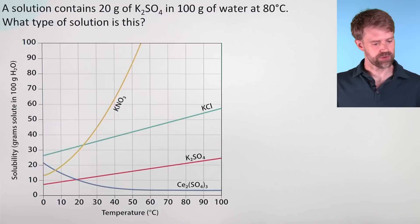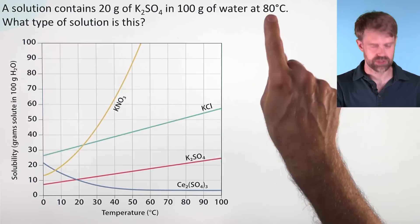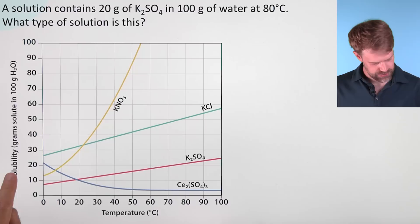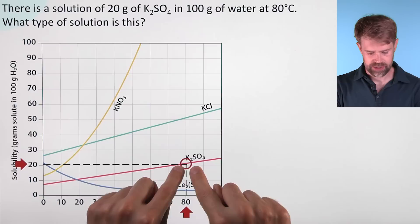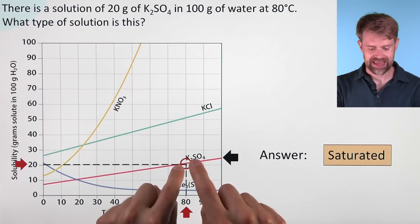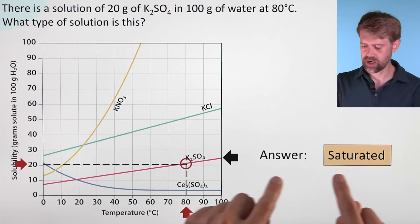Here's another. A solution contains 20 grams of K2SO4 in 100 grams of water at 80 degrees Celsius. What type of solution is this? Let's find these two values: 20 grams and 80 degrees Celsius. We find where they intersect and pay attention to the K2SO4 line. The point hits right on the line itself — it represents the maximum. So it tells us that we're talking about a saturated solution.